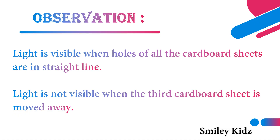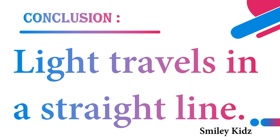Light is visible when holes of all the cardboards are in a straight line. Light is not visible when the third cardboard sheet is moved away. Conclusion: light travels in a straight line.